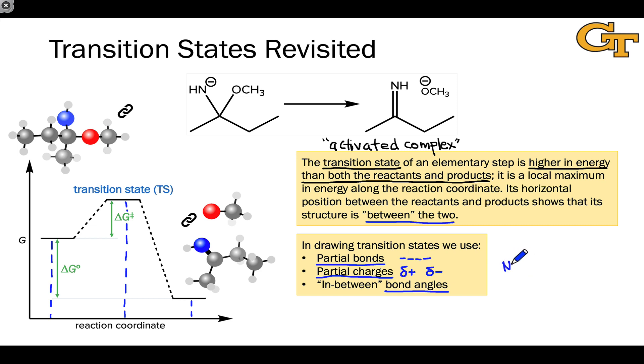One classic example of this is in the SN2 transition state, where the nucleophile is forming a bond to the electrophilic carbon while the leaving group is departing at the same time. In the transition state, the central electrophilic carbon is bonded, at least partially, to five things, and we see as a result trigonal bipyramidal geometry. You never get a ground state or energy valley organic molecule like this, but you do see in-between geometries like this in transition states on a regular basis.